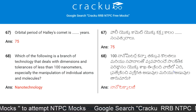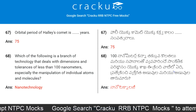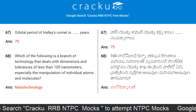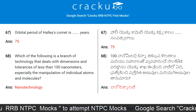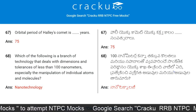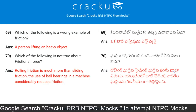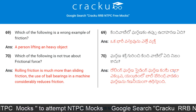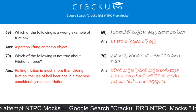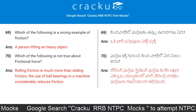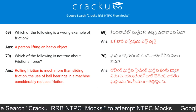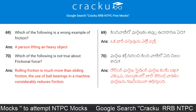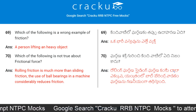Nanotechnology is the branch of technology that deals with dimensions and tolerances of less than 100 nanometres, especially the manipulation of individual atoms and molecules. Which one is a wrong example of friction? A person lifting a heavy object. Rolling friction is much more than sliding friction is not true about frictional force.